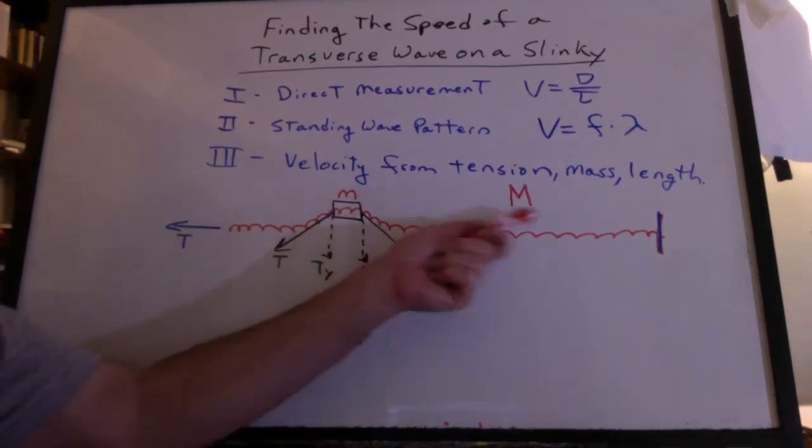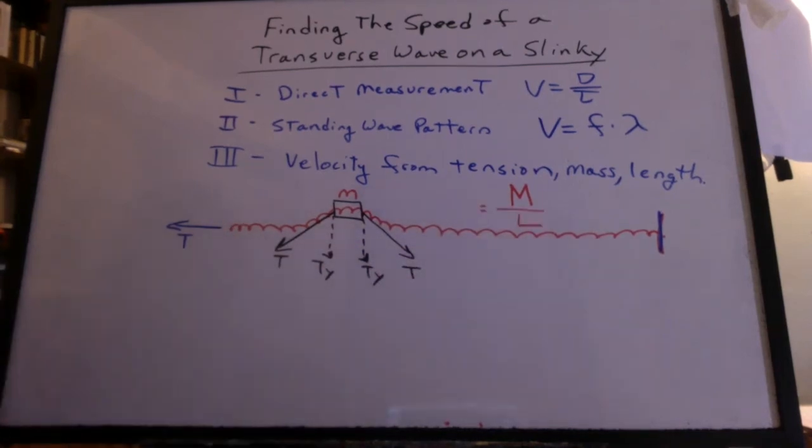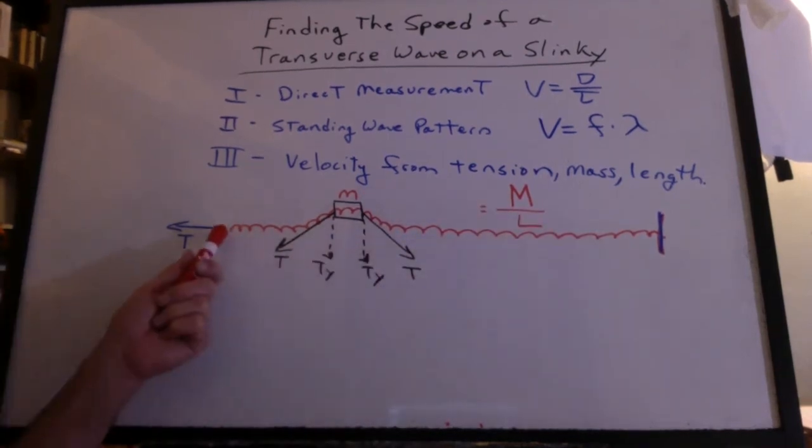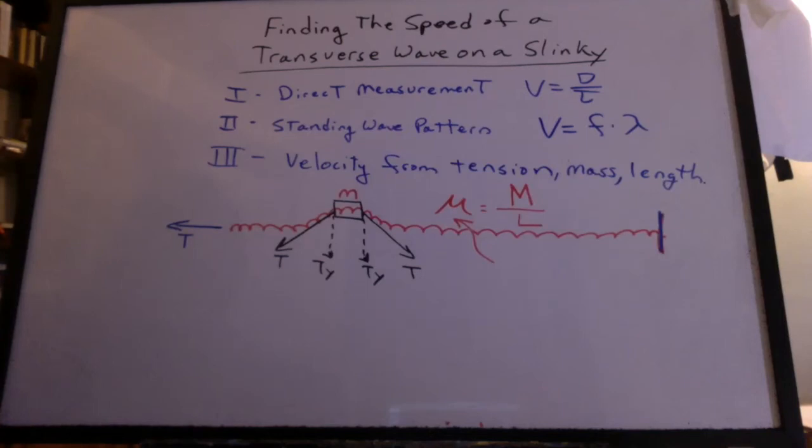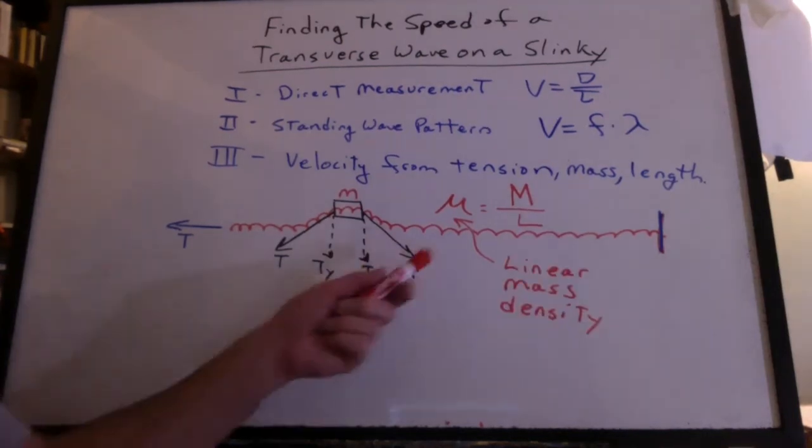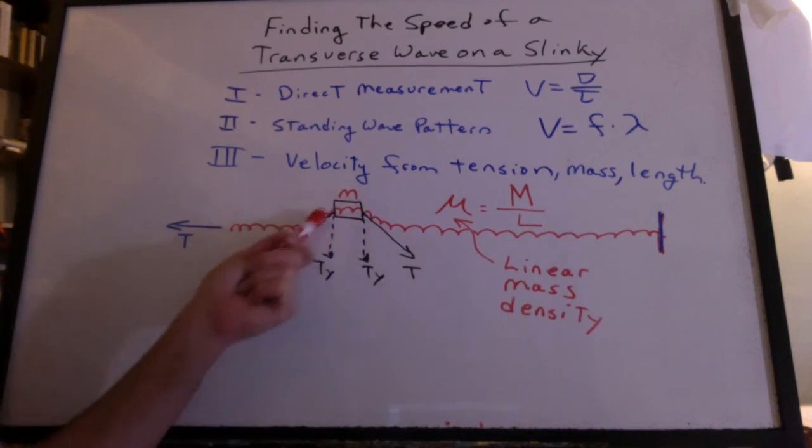So let's say we know the mass of the entire slinky, and we know the length of the slinky all stretched out. This ratio is called the linear mass density, and we're going to use that to figure out how much mass we have at the top of the wave.